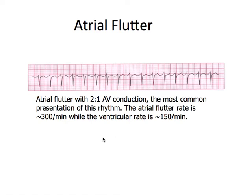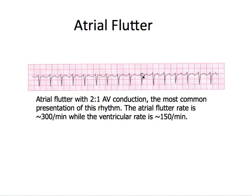Here's a picture of atrial flutter. This has what we call 2-to-1 AV conduction, where there are two P waves for every QRS complex. It's kind of difficult to see in this lead, but we have two P waves here in front of every QRS. Its most common presentation is this 2-to-1 AV conduction rate. If you think about cutting the 300 rate in half, you get the ventricular rate of 150. The P wave rate is actually doubled, and that's how they get the 300 marker.